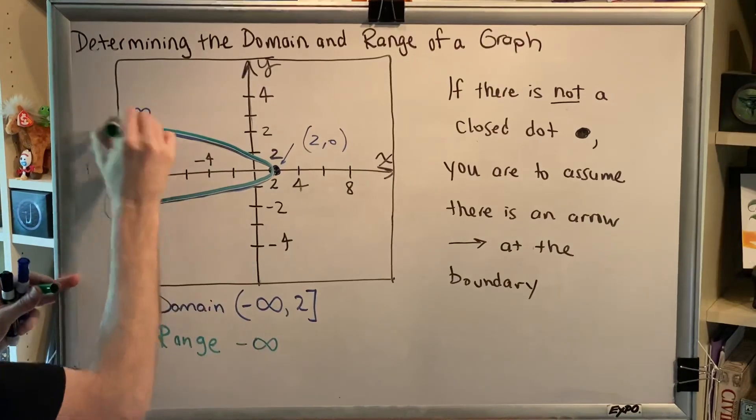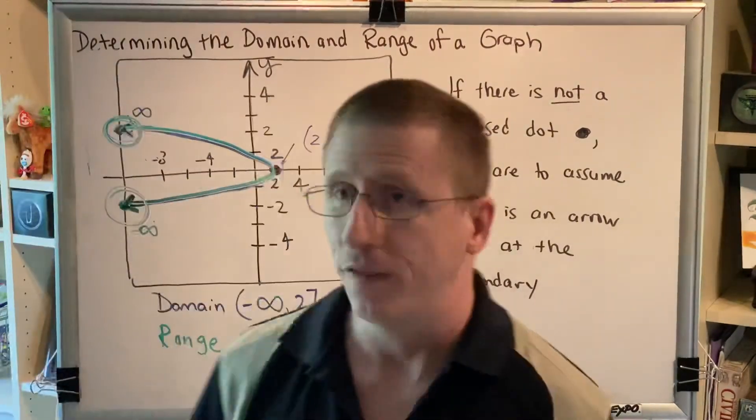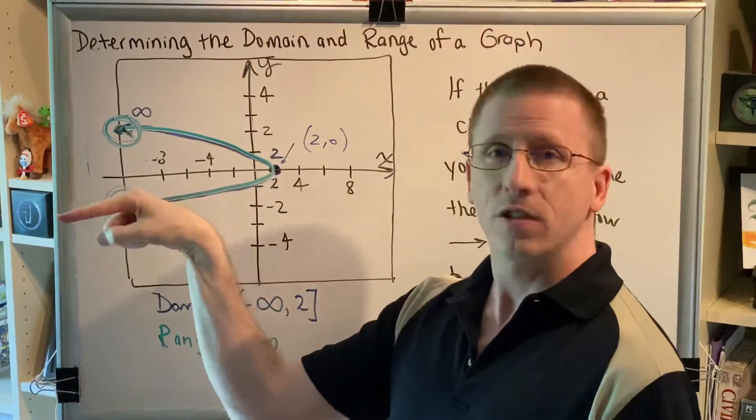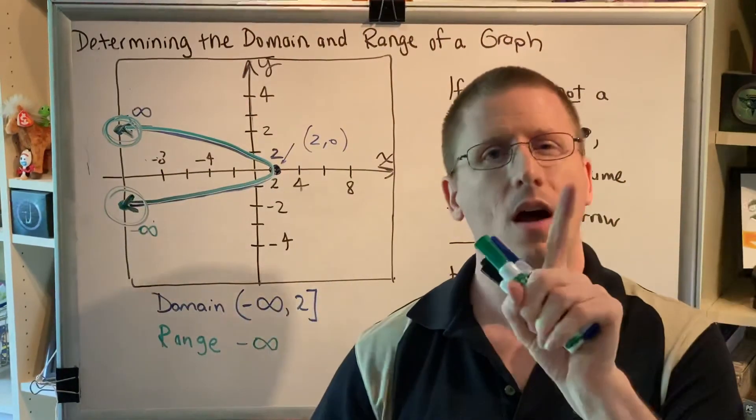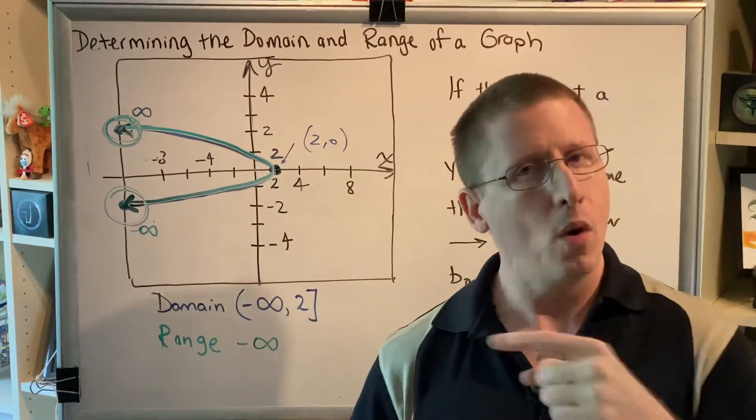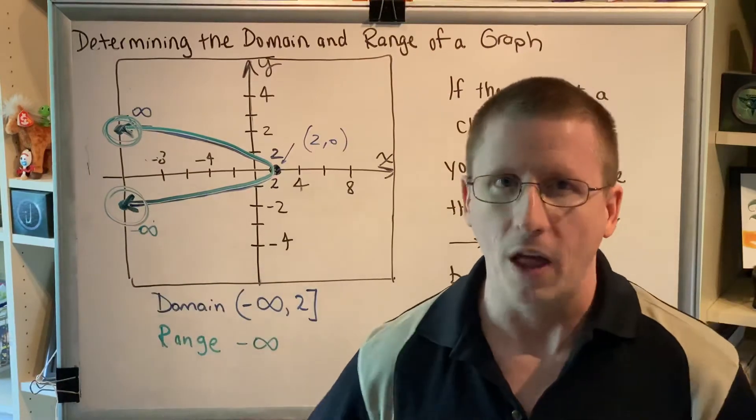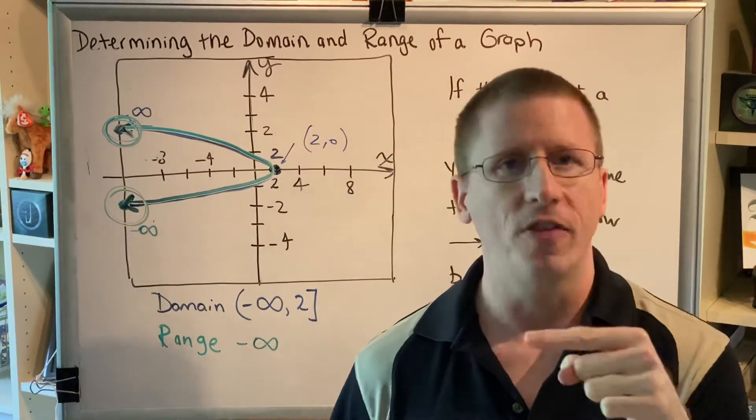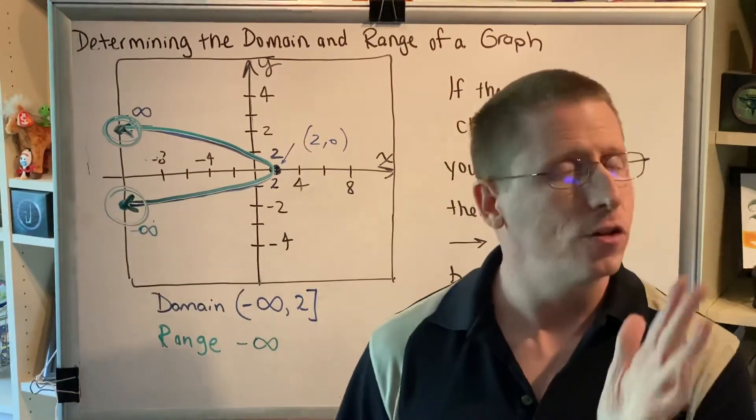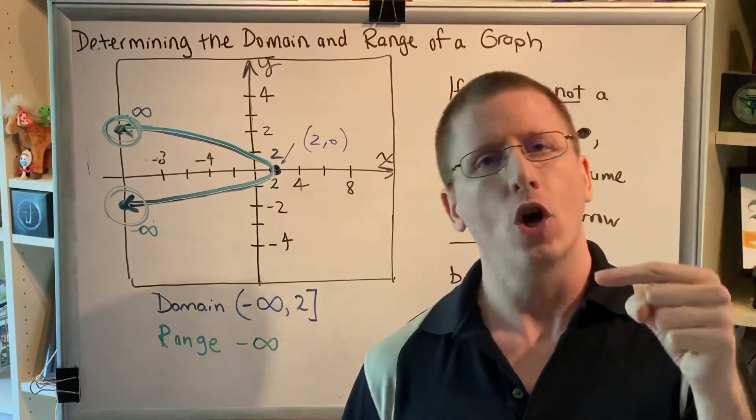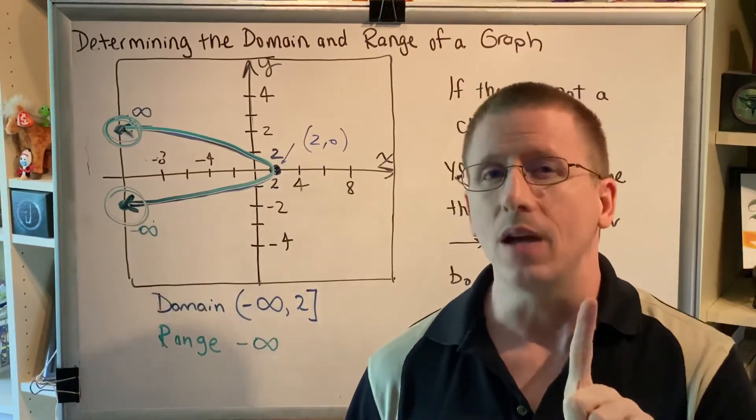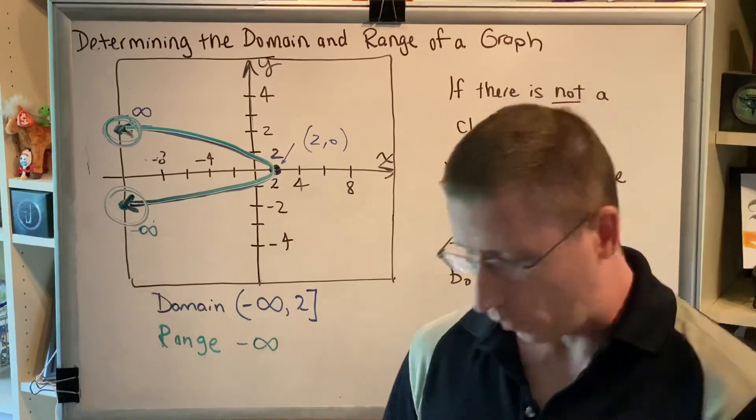How about this part of the graph? This part of the graph is pointing left and up. Left and up. Now it's pointing more left than it is up, but don't let that deceive you. We don't care about the left. We're measuring range. Range is up and down. So left and up, all we care about is the up. It's going up forever.